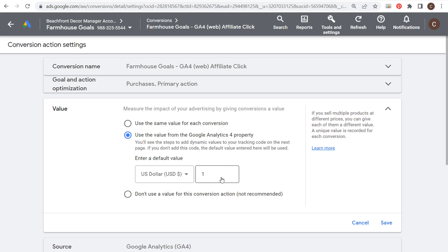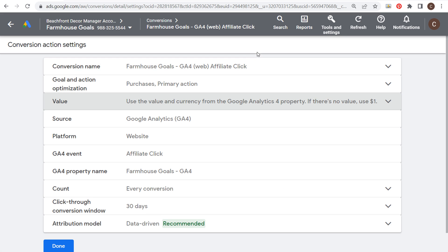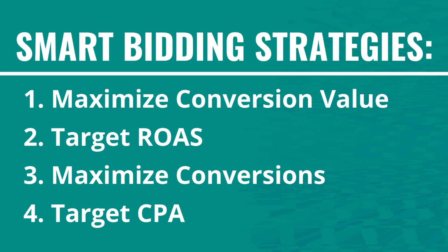If you are using a conversion value, use the maximize conversion value bid strategy. If not, go with maximize conversions. I prefer to set a target ROAS or target CPA — start with a minimum and then work to increase your target ROAS over time, or decrease your target CPA, so you're driving the most value for your business. If you have any questions about these four smart bidding strategies, leave them in the comments. Thanks for watching, and make sure you subscribe to the Surfside PPC YouTube channel.